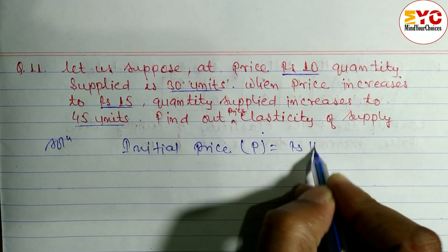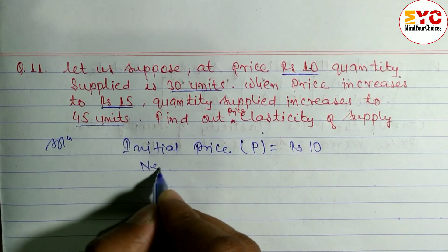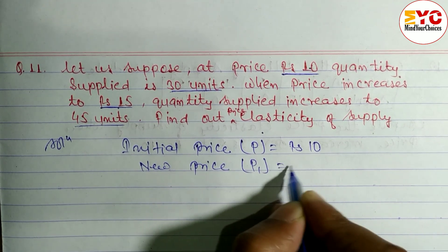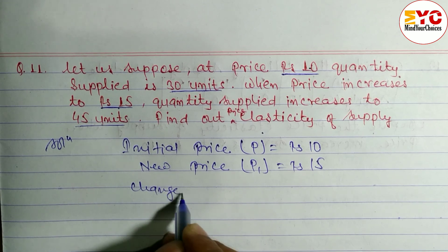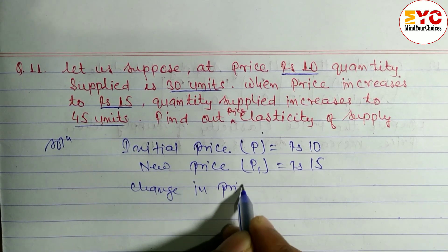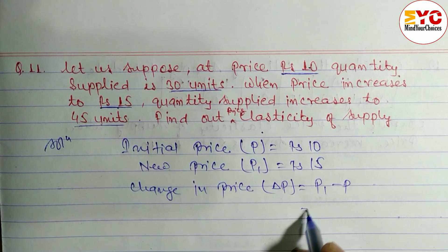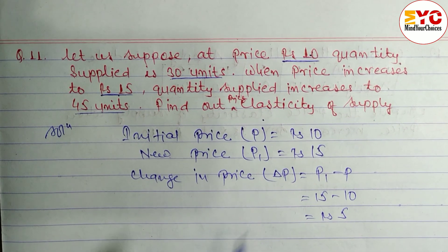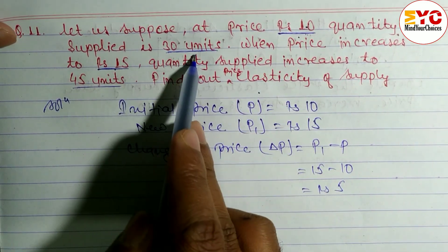So initial price p is equal to rupees 10, and new price, denoted by p1, is equal to rupees 15. Now we have to find out change in price. Change in price, denoted by Δp, is equal to p1 minus p — that is 15 minus 10 — which equals rupees 5.